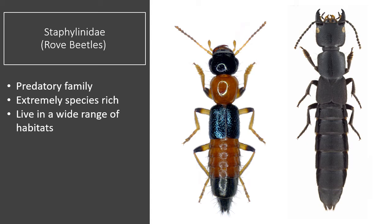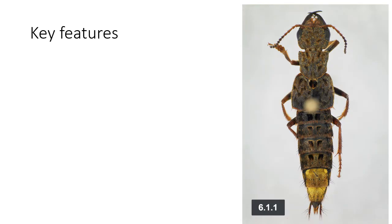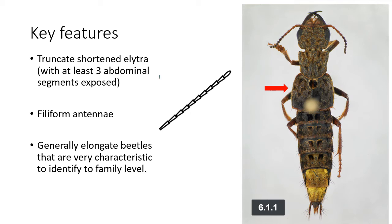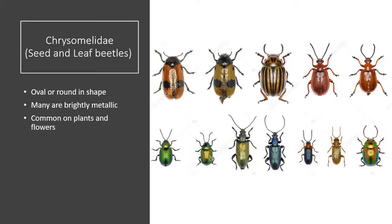Next up, we have the rove beetles, or Staphylinidae, or staphs. They are another predatory family of beetles that are extremely species-rich. Many rove beetles are predatory, but there are also a wide number of species that feed on decaying vegetation, fungi, and algae. Some species are also parasitic on other insects. Some key features to identify Staphylinids are truncate shortened elytra. These elytra are very small and short compared to other beetle families, and there are at least three abdominal segments exposed. In most other families, these are covered by the elytra. The antennae are filiform, and they are generally very elongate beetles that are very charismatic to identify at the family level.